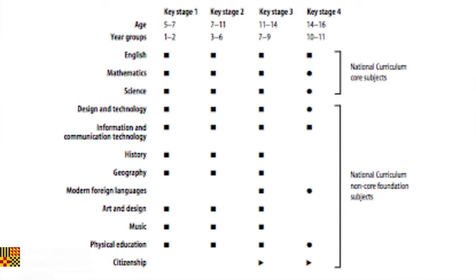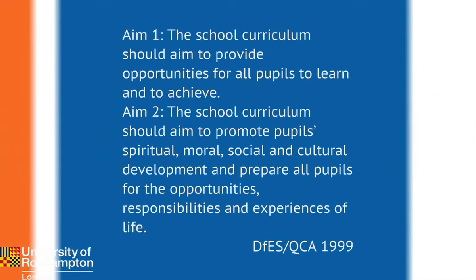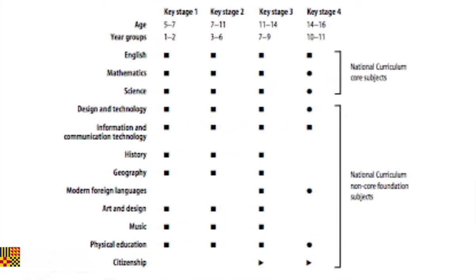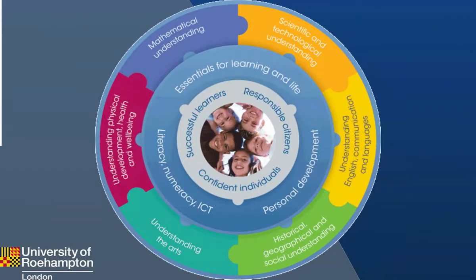How does this get worked out in practice? We end up with the grid, the subject-based approach. There are other ways of achieving these aims without dividing curriculum up into subjects. Sir Jim Rose did a fine job of rethinking this — putting children at the heart of the curriculum and starting with the aims about responsible citizens, confident individuals, and successful learners. Notice where they put ICT on this: almost at the heart of the curriculum, as one of the core subjects essential for learning and life.